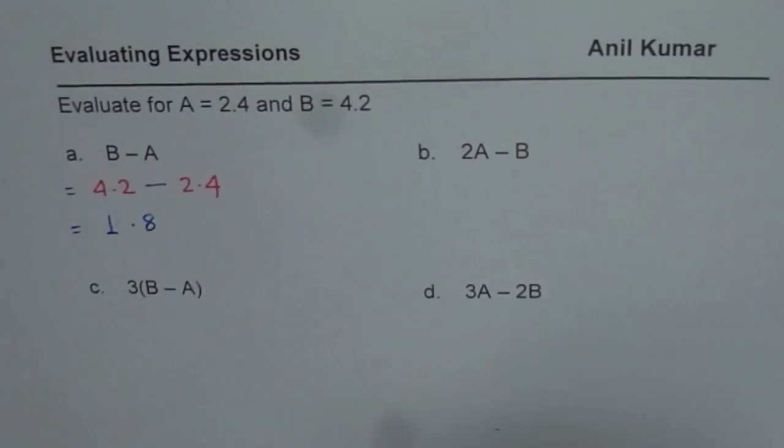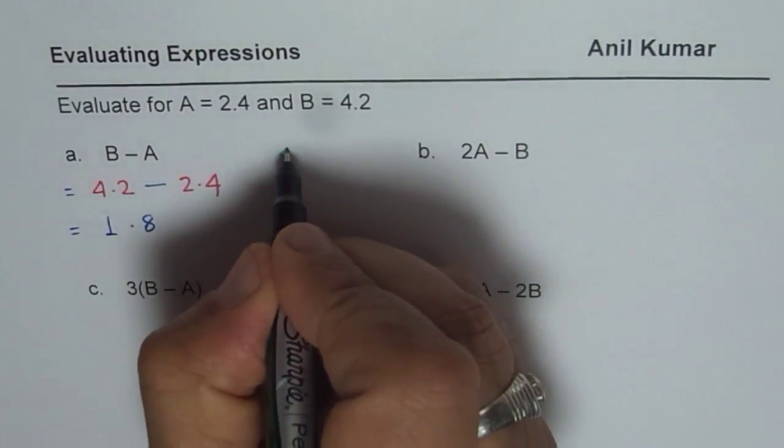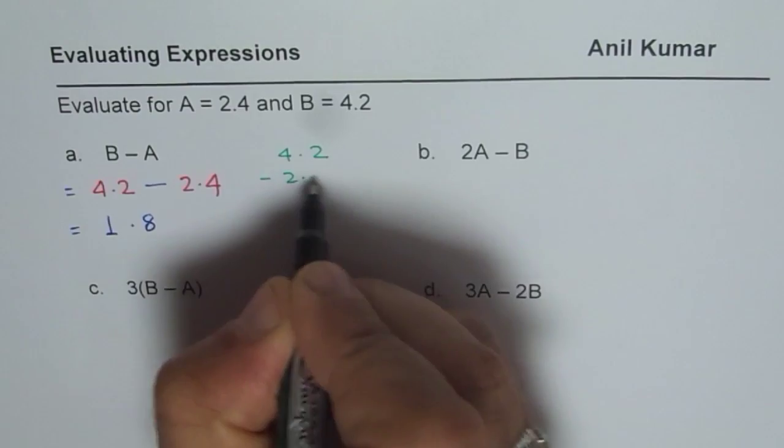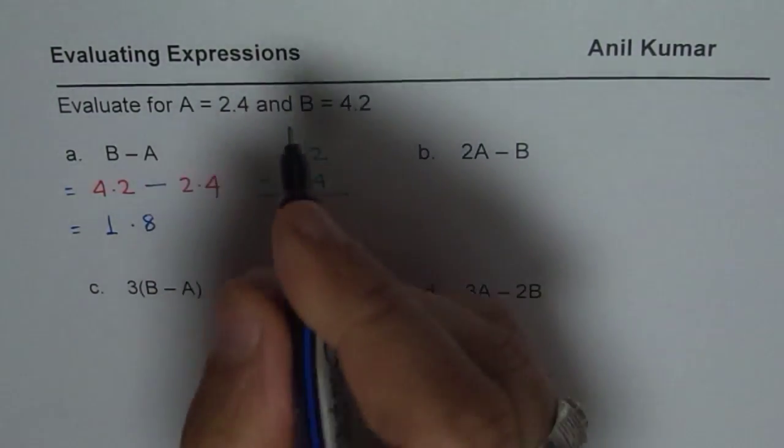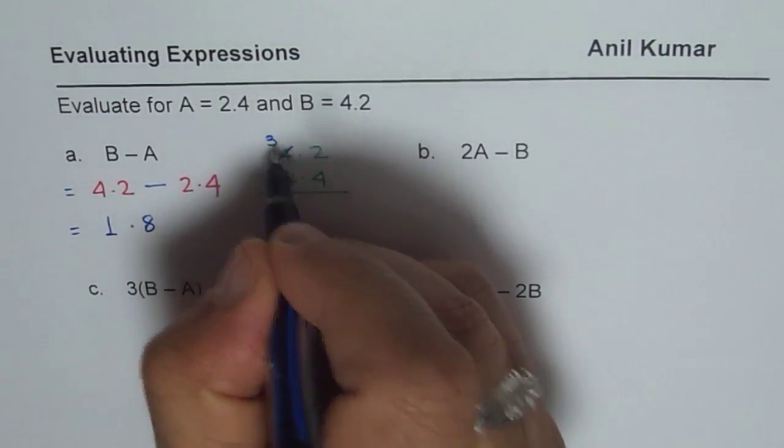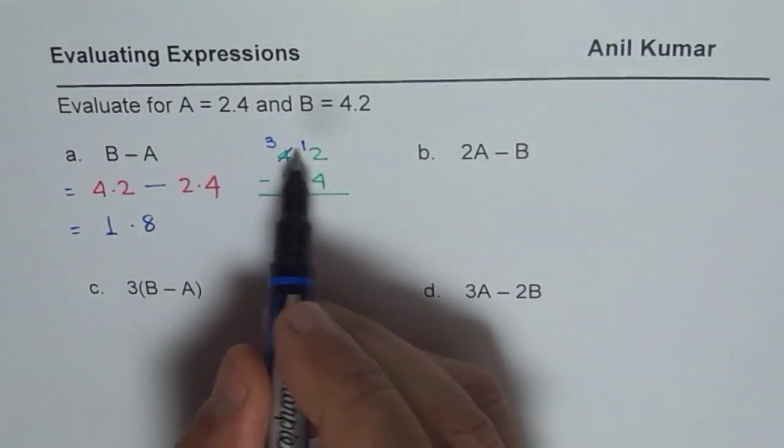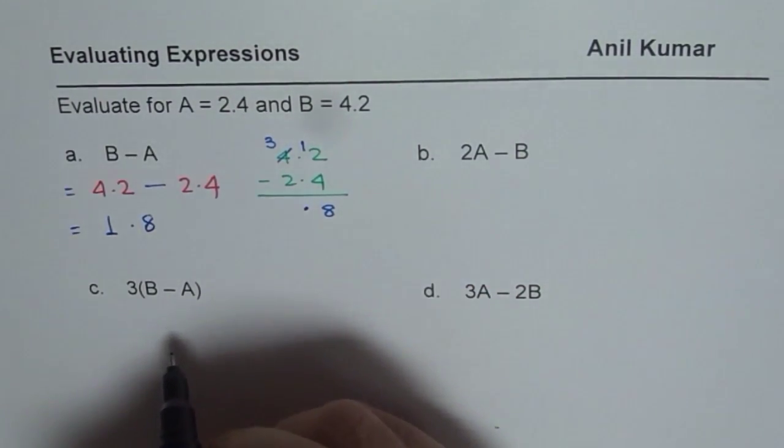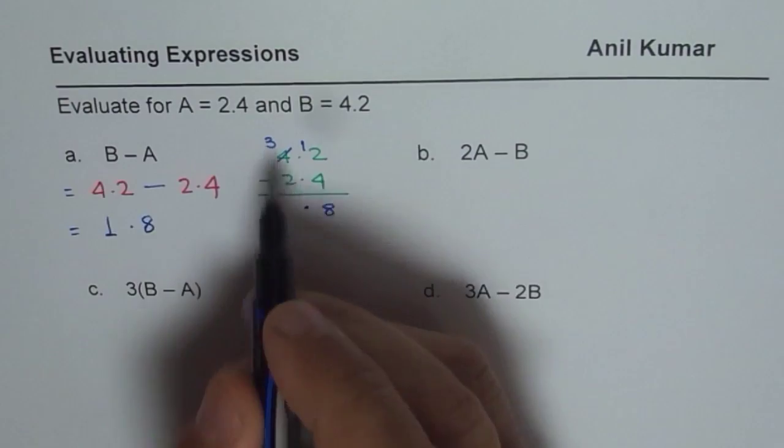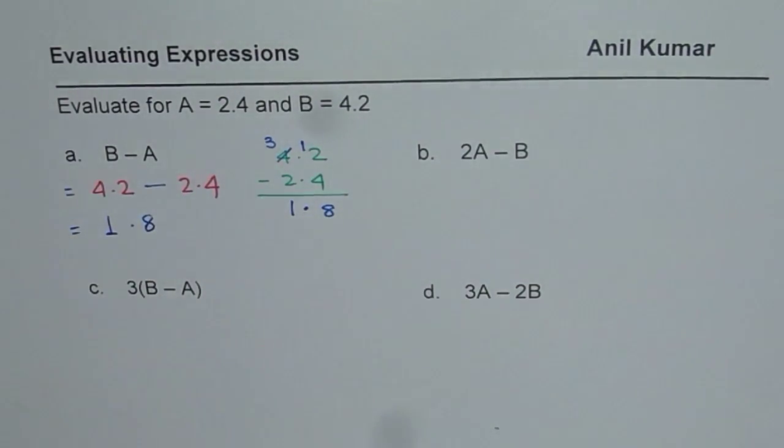You could also do it separately on the side. So you could do 4.2 take away 2.4. Now you need to borrow. So when you borrow from 4, it becomes 3 and that becomes 12. So 12, when you take away 4, you get 8. Align the decimals, and then take away 2 from 3 to get 1. So whenever you are working with decimal numbers, align the decimals to get the right answer.